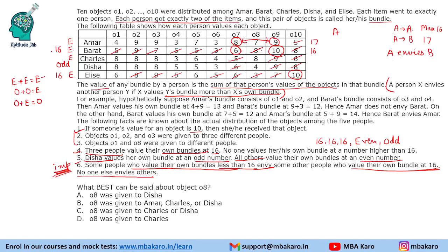This last statement is very important and will be used several times. Since A envies B, A cannot have 16, meaning A is less than 16. That means Charles will get 16. The only possibility for Charles is 8 plus 8. There are four 8's available and Charles has to pick 2. Since objects O1, O2, and O3 were given to 3 different people, Charles will get only 1 of these values. So Charles will definitely get O8. Then we are left with O1, O2, and O3.